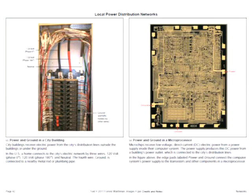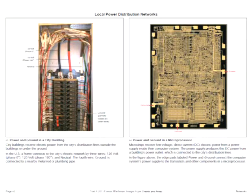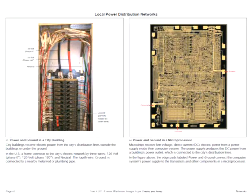Local power is needed by both buildings and microchips. On the left are typical power lines coming in from the grid outside a building. On the right, you can see a pad called power and two pads called ground — all of the transistors in that microchip are connected on one side to power and on the other side to ground.